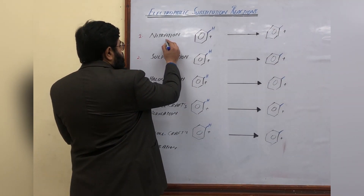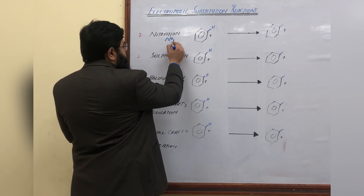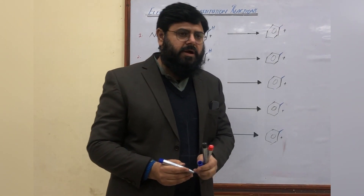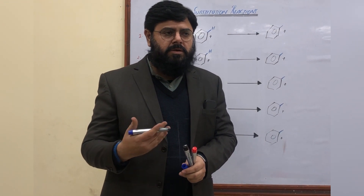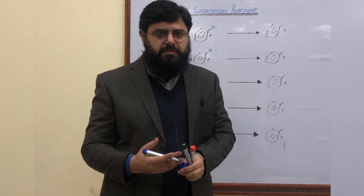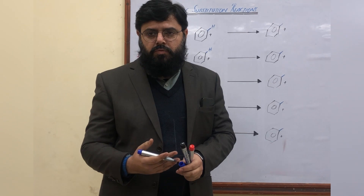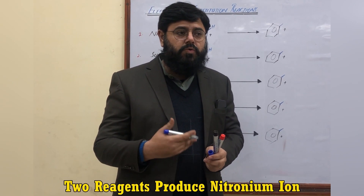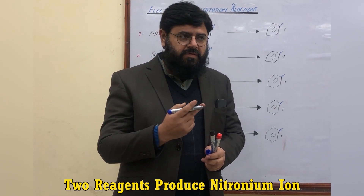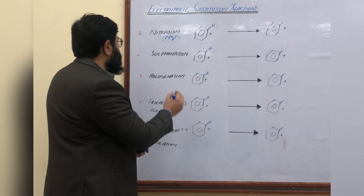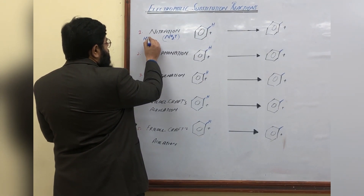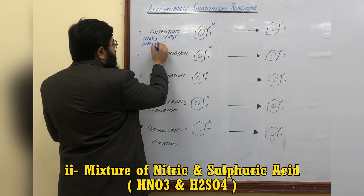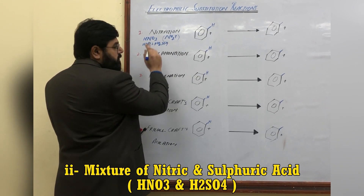The nitronium ion is a charged species, so it will not be available in any packing — it must be produced by reacting certain species. To produce the nitronium ion, two reagents can be used: one is nitric acid alone, and the other is a mixture of nitric acid and sulfuric acid.